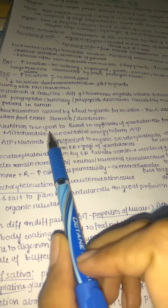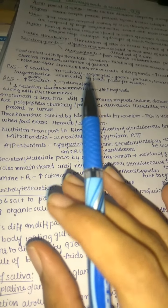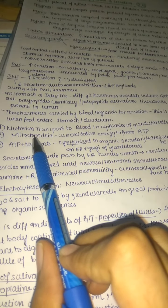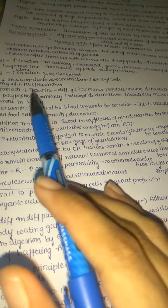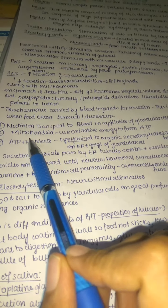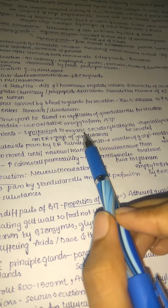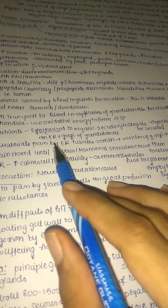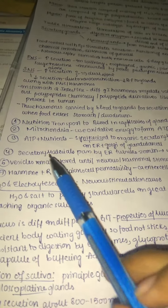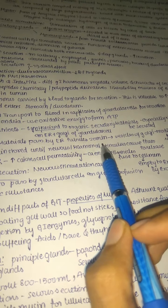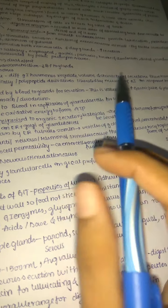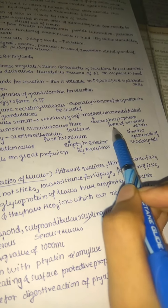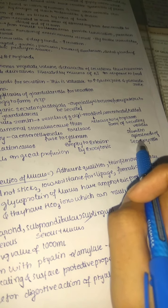For secretion to occur, nutrition must be transported by blood into capillaries of glandular cells. With nutrients available, mitochondria use oxidative energy to form ATP. This ATP, along with nutrients, is used to synthesize organic secretory materials. Ribosomes form proteins to be secreted, and this synthesis occurs in the endoplasmic reticulum along with the Golgi apparatus of the glandular cell. Secretory materials pass through the ER tubules, then to the Golgi for modification, concentration, and packaging. They are then released into the cytoplasm as secretory vesicles, which are stored at the apical ends of secretory cells.